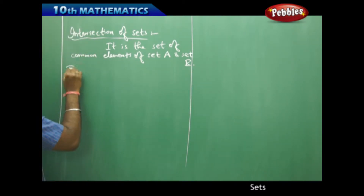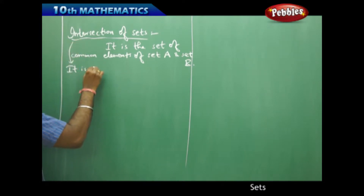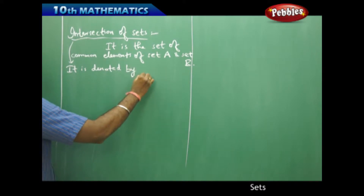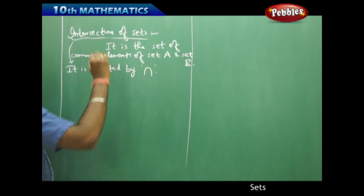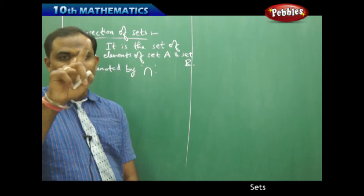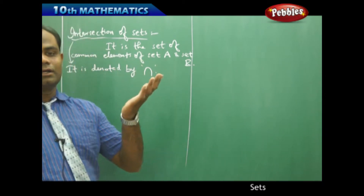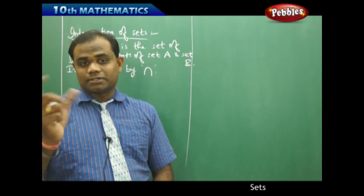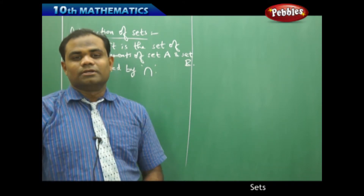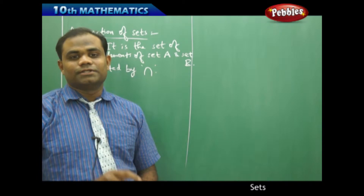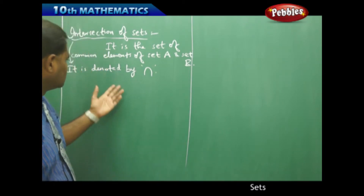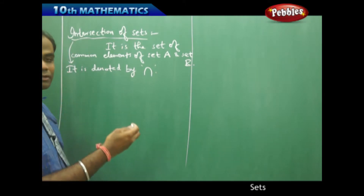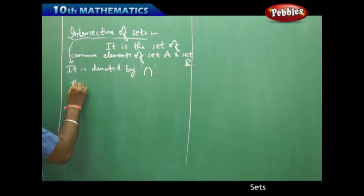Intersection is generally denoted by the reverse of union — when union is U-shaped, intersection is the inverted part of union. Union and intersection are said to be the opposite of each other; they are antonyms of each other. Let's continue with an example to understand this more clearly.